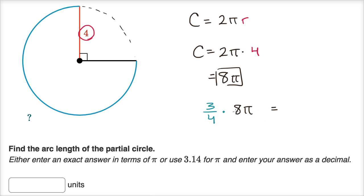What is that going to be? Well, three fourths times eight: three times eight is 24, divided by four is six. So this is going to be equal to six pi. Another way to think about it: one fourth of eight is two, so three fourths is going to be six. Or, one fourth of eight pi is two pi, and so three of those is going to be equal to six pi. So the arc length of the partial circle is six pi.